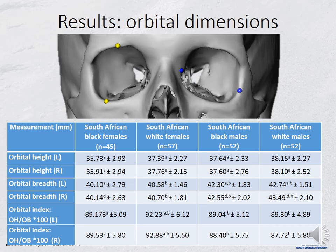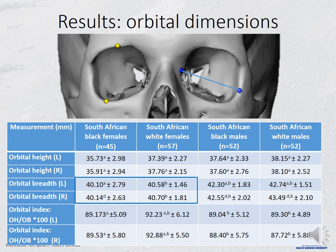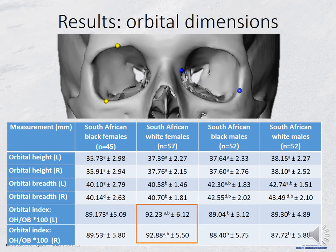To determine the orbital dimensions, the orbital height, breadth, and orbital index were calculated for each group. The orbital height was significantly smaller in black females, with no significant difference between the other groups. The orbital breadth was significantly smaller in females compared to their male counterparts, regardless of ancestry. White males presented with the largest orbital diameters. The orbital index was calculated as the ratio of orbital height divided by orbital breadth. White females had the largest orbital index, indicating a rounder rather than rectangular shaped orbit, as seen compared to all other groups.